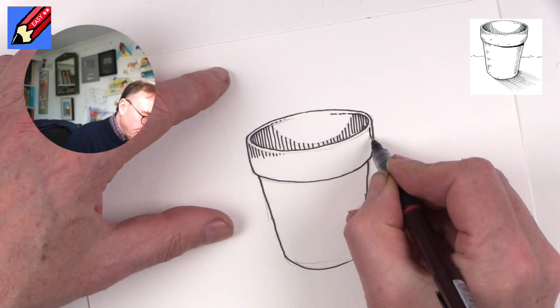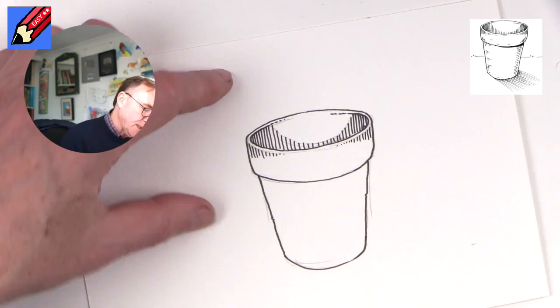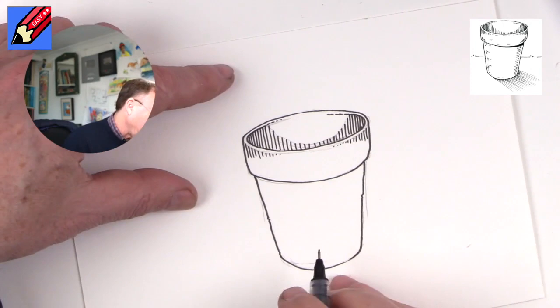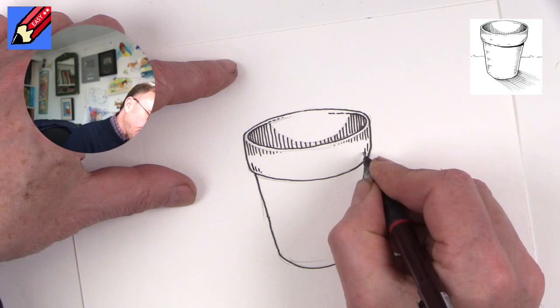Getting smaller and smaller and smaller, and that kind of gives this feeling of the thickness of the edge of the flower pot there. And we might draw a couple more down there like that, getting smaller as we go.